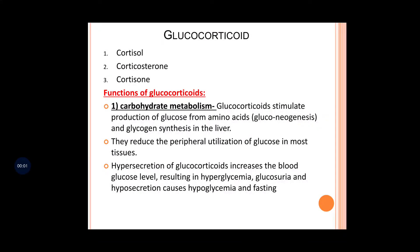Starting with another adrenal cortex hormone known as the glucocorticoid. The major three hormones present in glucocorticoid are cortisol, corticosterone, and cortisone. The major contribution is of cortisol.